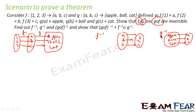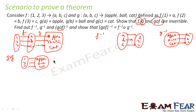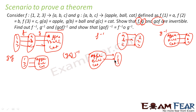Now find g∘f and (g∘f)⁻¹. g∘f maps 1→apple, 2→ball, 3→cat. So (g∘f)⁻¹ maps apple→1, ball→2, cat→3. I have now found f⁻¹, g⁻¹, g∘f, and (g∘f)⁻¹.